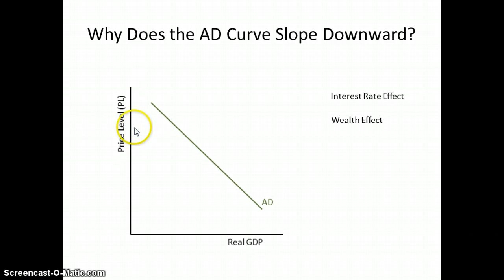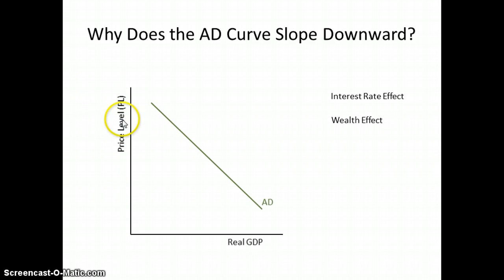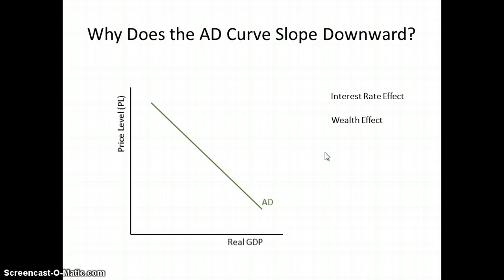The next is the wealth effect. Wealth is a measurement of total household assets — houses, jewelry, vehicles, artwork. If we add that up per individual and multiply by every person in the nation, we have a measurement of wealth. If price levels go up, our assets feel less valuable relative to those price levels, so we feel less wealthy. At lower price levels, the opposite happens — our assets have greater value relative to the price level and we spend accordingly. The wealth effect really affects consumption.